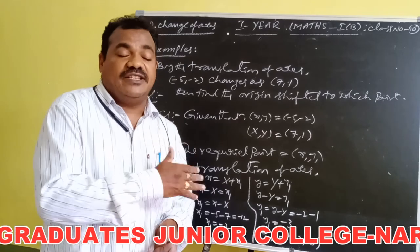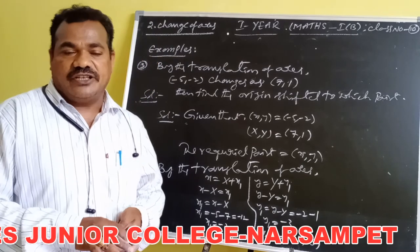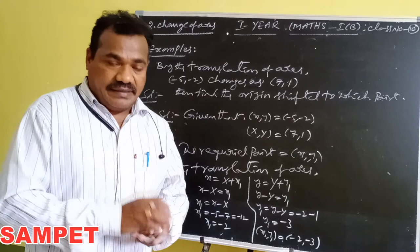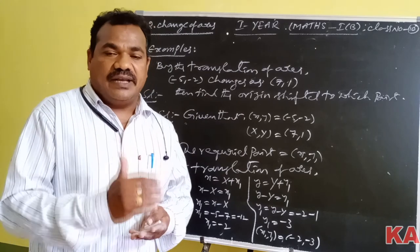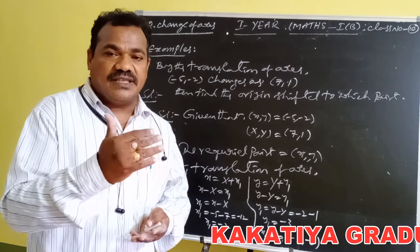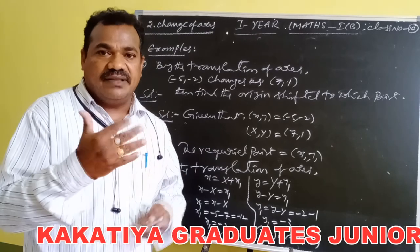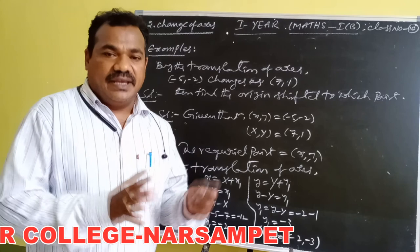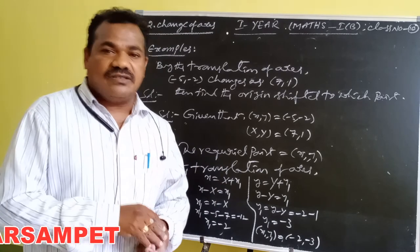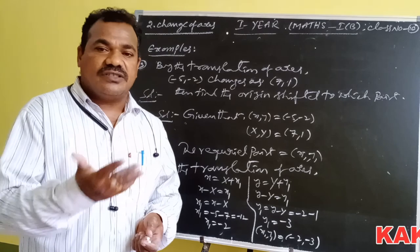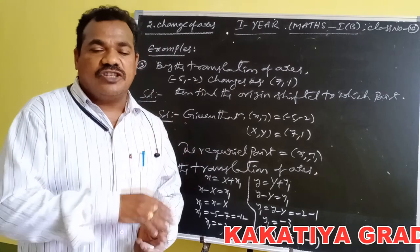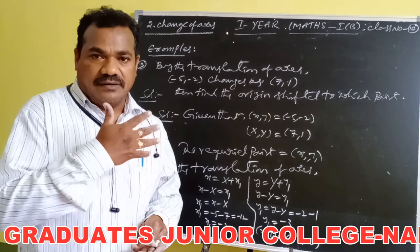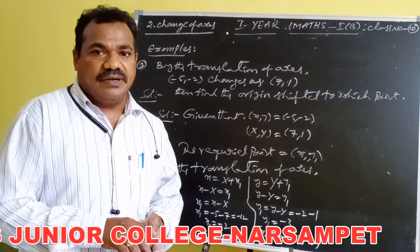So students, these are some example problems based on translation of axes. In translation of axes, we use the key relation: small x equals capital X plus x₁, and small y equals capital Y plus y₁. Using this relation, we can find the old system coordinates, the new system coordinates, or the shifted origin point — any one of the three coordinates.